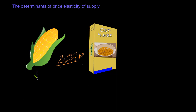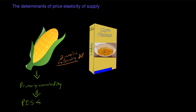The reason is because corn is what we call a primary commodity — any raw material extracted directly from the earth. This includes all agricultural products, mining products, products extracted from the sea like fresh fish, or energy resources like oil, coal, and natural gas. These primary commodities tend to have a relatively inelastic supply. The producers tend to be relatively unresponsive to price changes because production cannot be quickly increased or decreased in response to price changes.